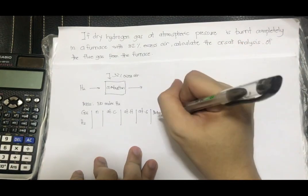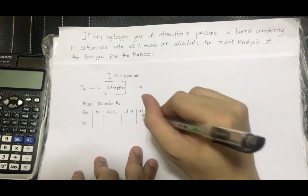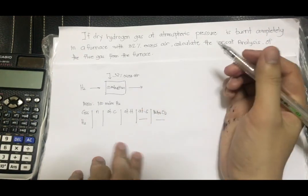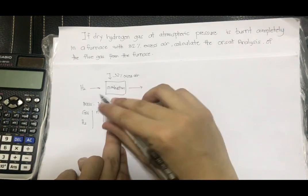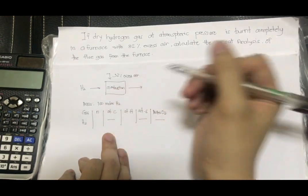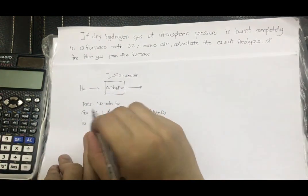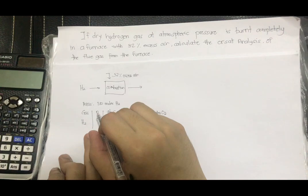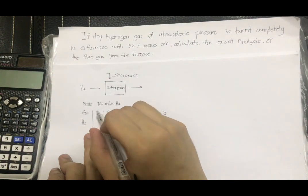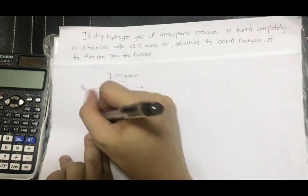Since we don't have moles of O2, and we don't have sulfur, and in our fuel, we don't have carbon either. So in our moles column, we'll just put whatever basis we set. We set a basis of 100, so we'll just put 100.